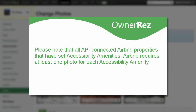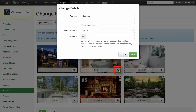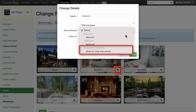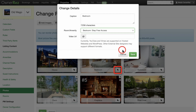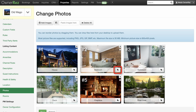Please note that all API-connected Airbnb properties that have set accessibility amenities — Airbnb requires at least one photo for each accessibility amenity. For instance, if you selected a bedroom that had the accessibility feature of Step-Free Access, you'd need to include a picture of that and use a tag to tie it to that amenity.